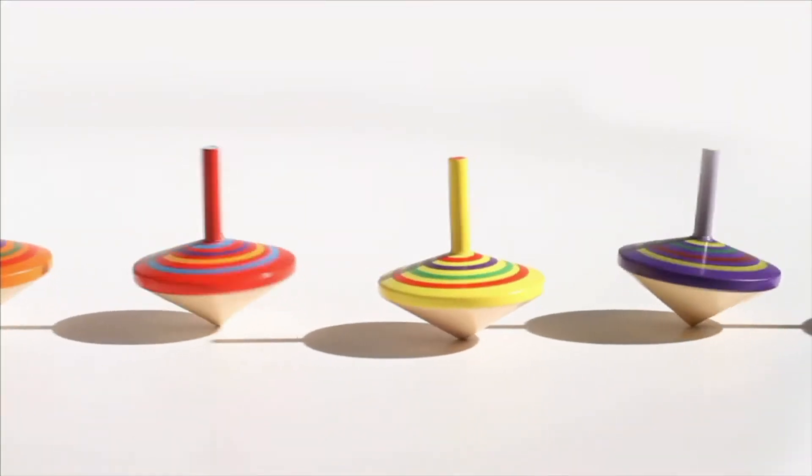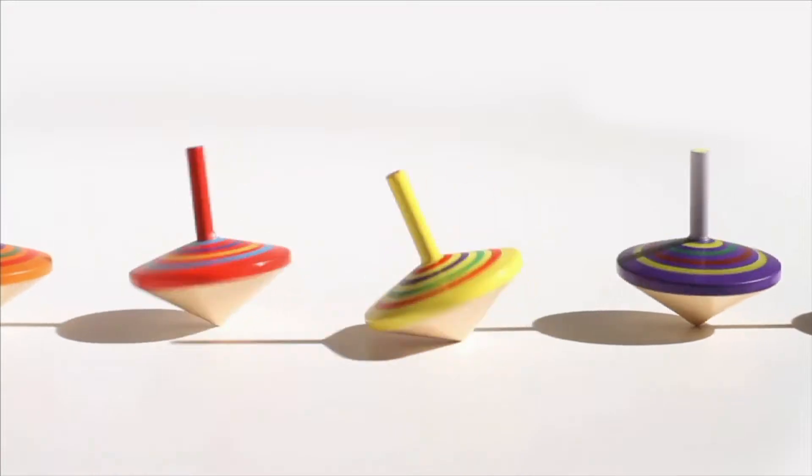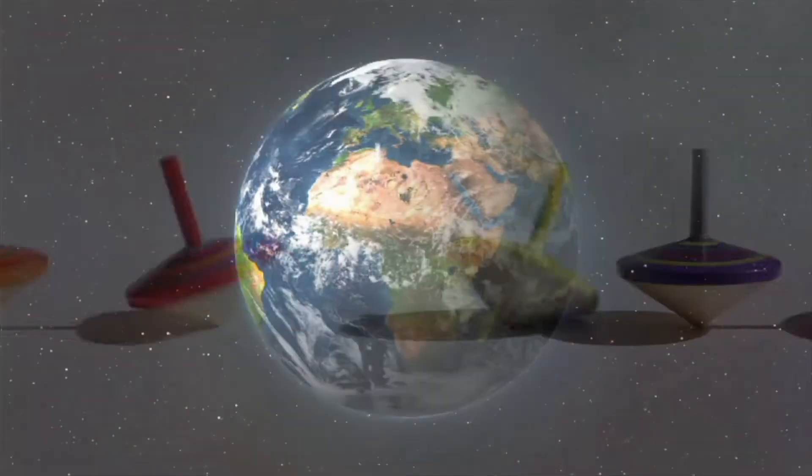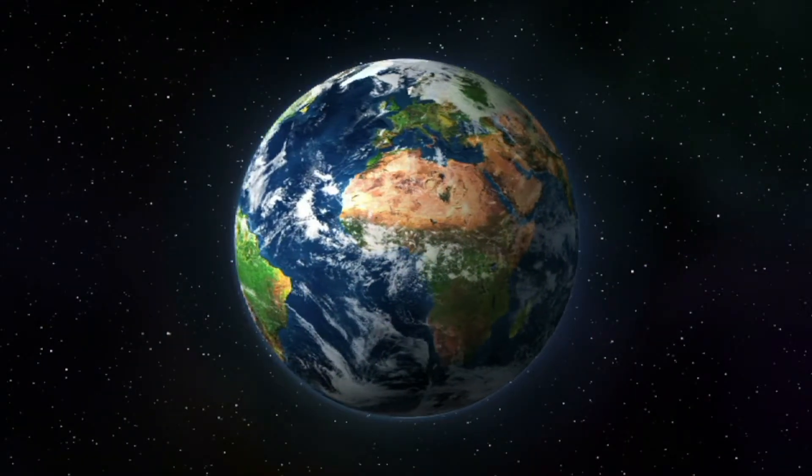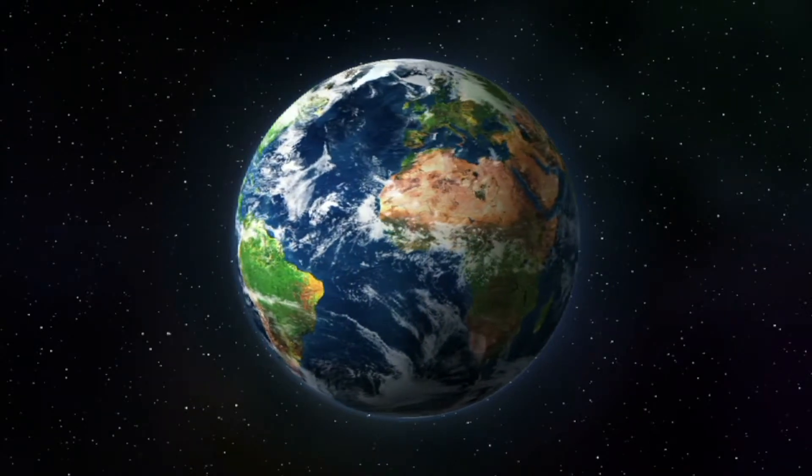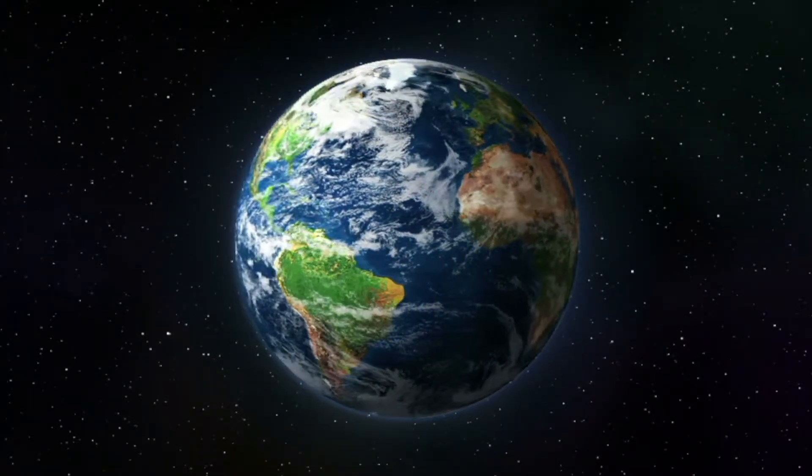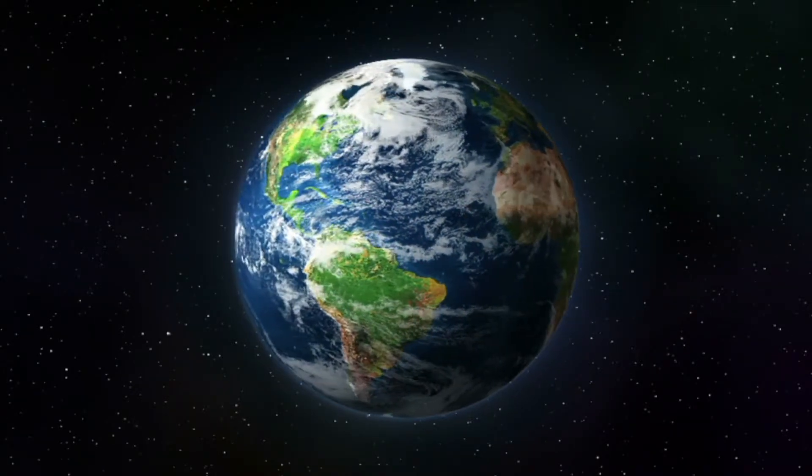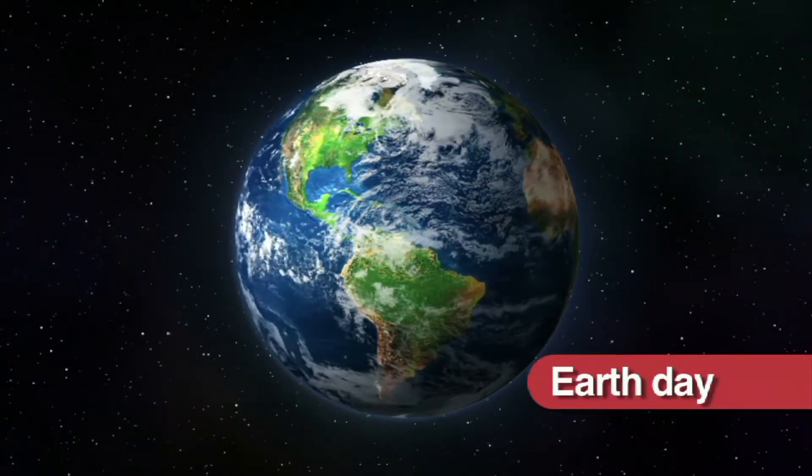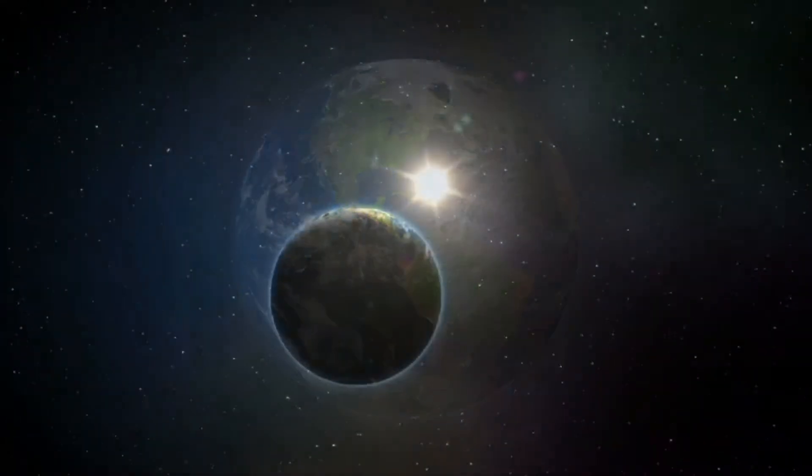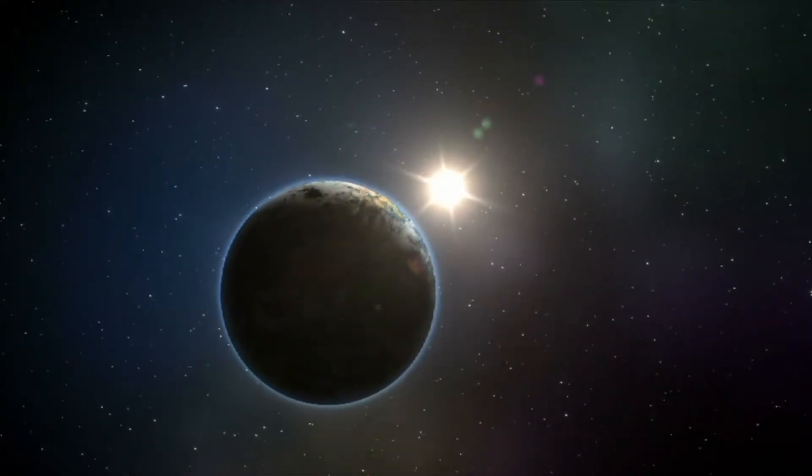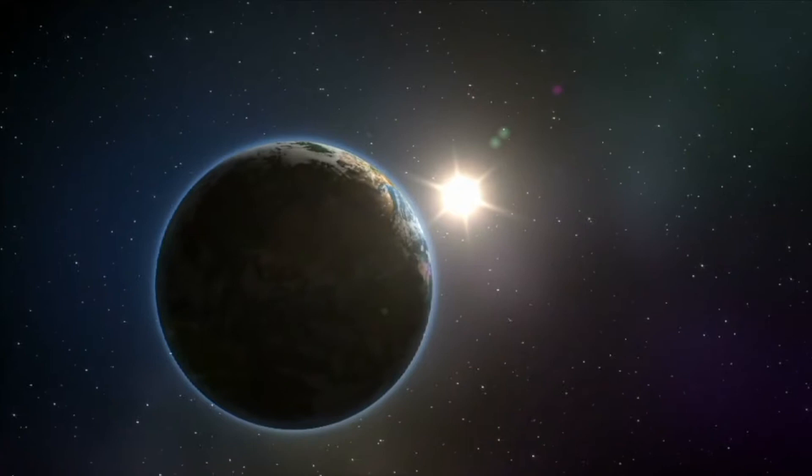Imagine a top spinning. The Earth and all the planets spin like this. It takes the Earth 24 hours to make one rotation around its axis. This is also called an Earth Day. We measure our days based on the rotation of the Earth around its axis.